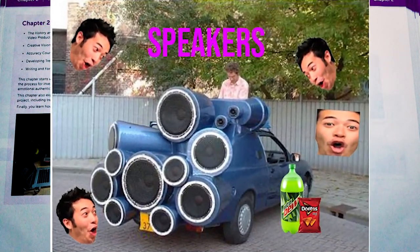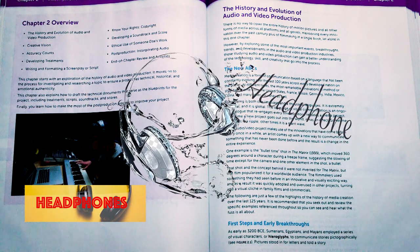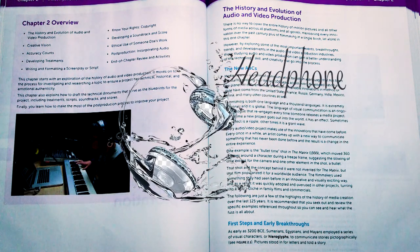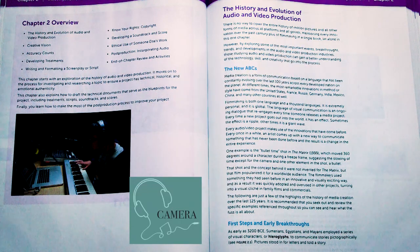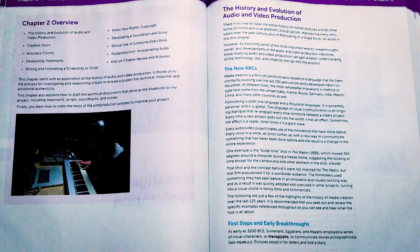This is a typical setup for composing music on a computer. This chapter talks about the history and evolution of audio-video production, creative vision, accuracy, writing and formatting a screenplay or script, copyright, soundtrack and score, ethical use of someone's work, post-production incorporating audio, and then there's an end-of-chapter activity.